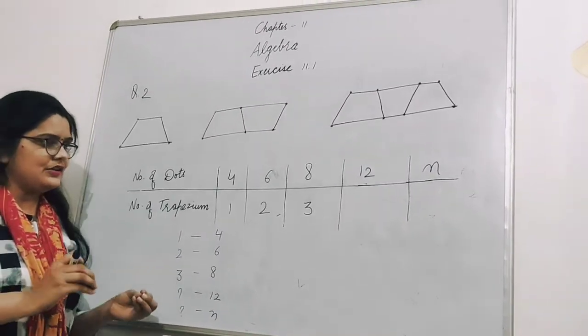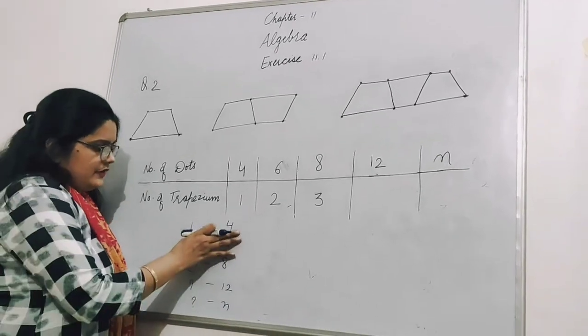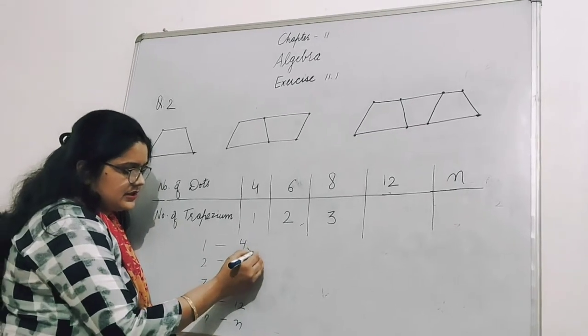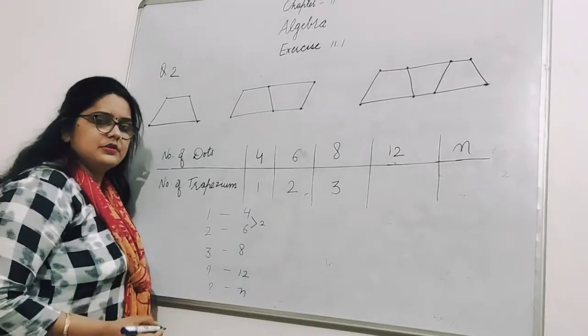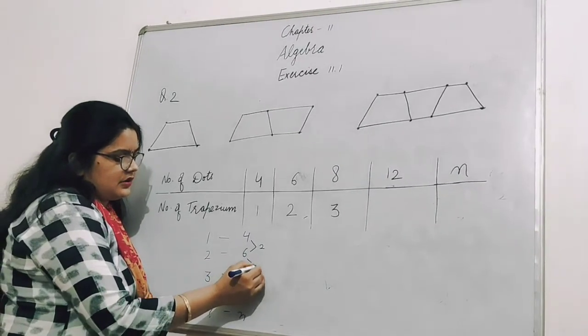First, let's see the difference between number of trapeziums. Difference between 6 and 4 is 2. Between 8 and 6, again 2.